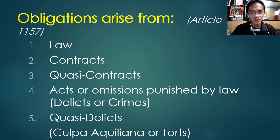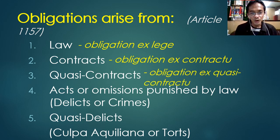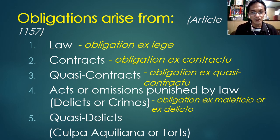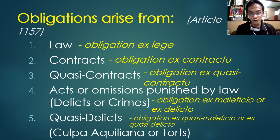Obligations arising from law are also called obligation ex-lege; those coming from contracts are called obligation ex-contracto; quasi-contracts are obligation ex-quasi-contracto; delicts are called obligation ex-maleficio or ex-delicto; while quasi-delicts are called obligation ex-quasi-maleficio or ex-quasi-delicto. For the board exam, just know that some authors also refer to these sources by their Latin names.